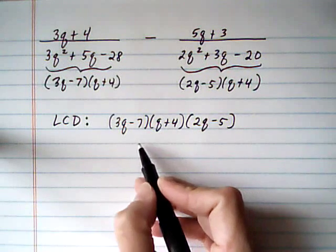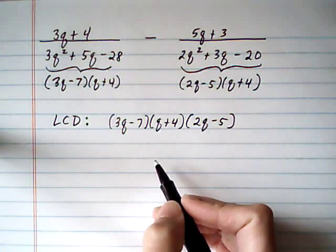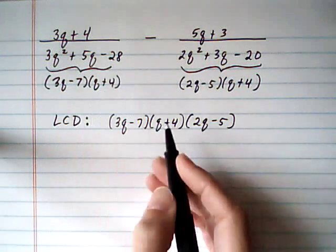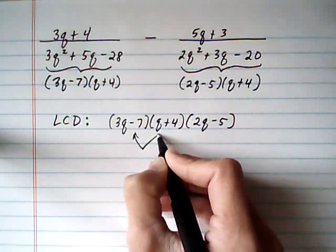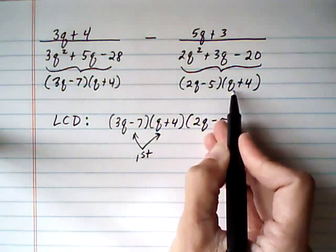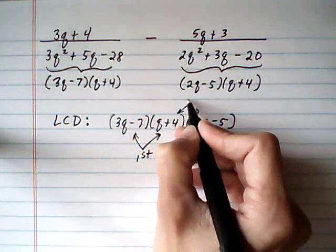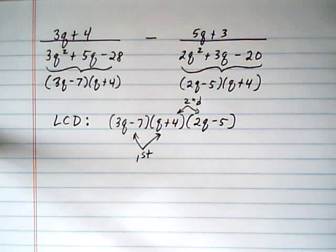And remember, when you're building the LCD, you want it to contain each denominator completely. So, for example, 3q minus 7 and q plus 4, that's the first denominator. 2q minus 5 and q plus 4, that would be these two factors. That's the second denominator. So as long as your LCD contains each denominator and it doesn't have extra factors that are not necessary, then you're going to have the least common denominator.